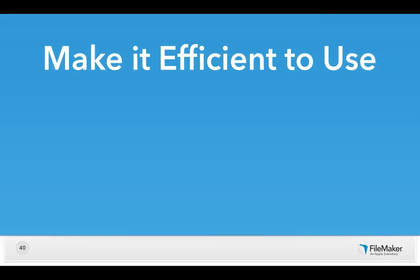Now let's talk about how to make it efficient to use. Efficiency for users of software is all about reducing demand. Any software application provides three kinds of demand: cognitive demand — how much does the interface make the user think; visual demand — how much information do they have to sort through; and physical demand — how much do they have to move their fingers or mousing hand to accomplish their goal.